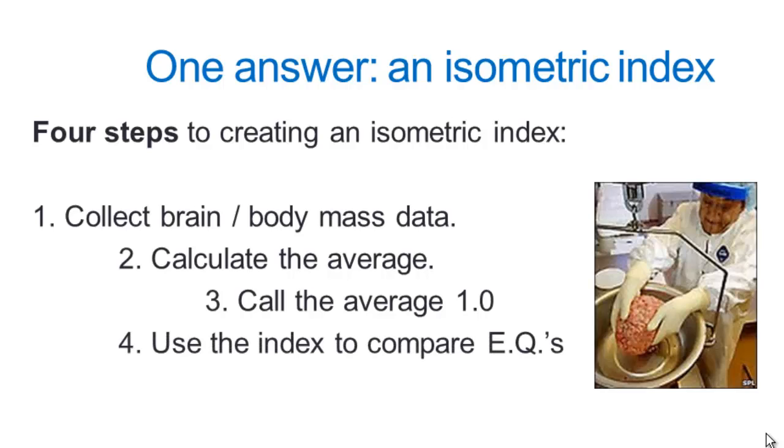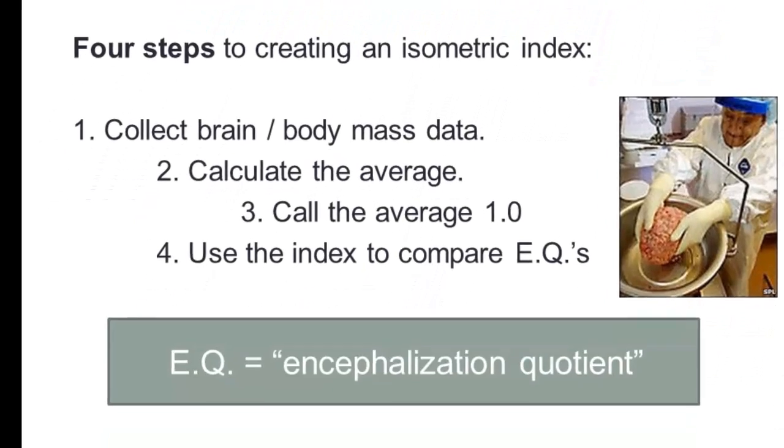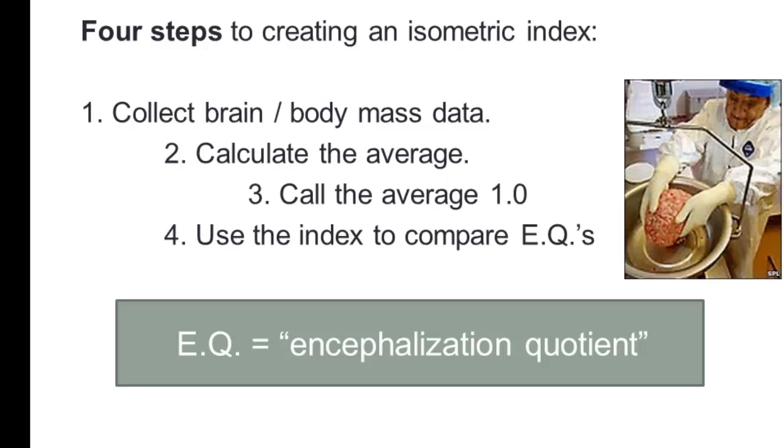We can then use this index that we've constructed to compare our brains using an EQ. And an EQ refers to an encephalization quotient. So it's just an index that allows us to quickly state the relative size of different brains.